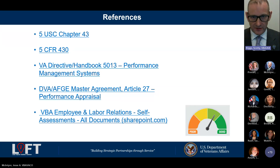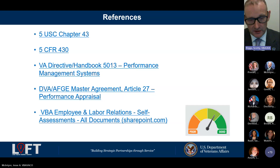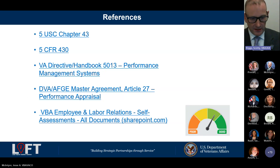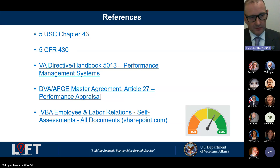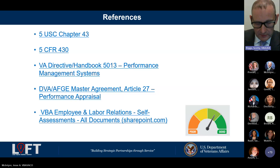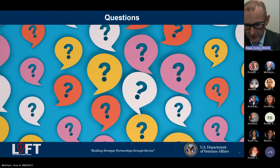For references: 5 USC Chapter 43 governs performance from a law standpoint. VA Directive Handbook 5013 is our performance handbook. The AFGE Master Agreement — specifically Article 27 — covers the performance appraisal process in our union collaboration. The last link is our VBA LER division SharePoint site, which has many resources and templates related to this topic. We've tried to share all of those with you throughout this session.